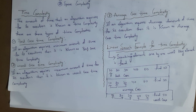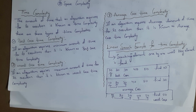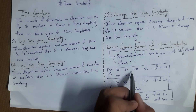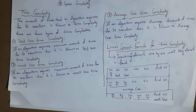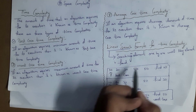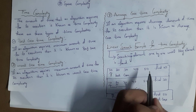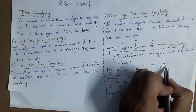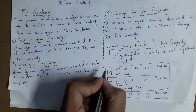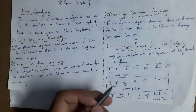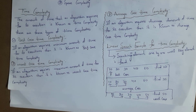Linear search is the process of searching elements one by one until we find the key element. Here I took an example with five elements: 10, 20, 30, 40, and 50. If I want to find element 10, we start from the first position. The first element is 10, so we got our required element at the first position. This is known as best case time complexity.